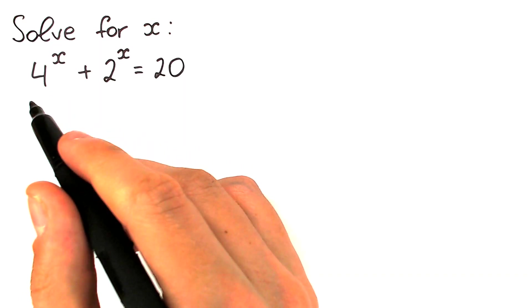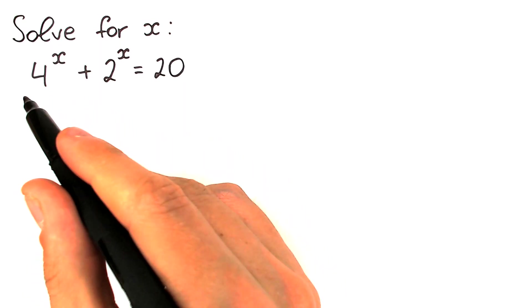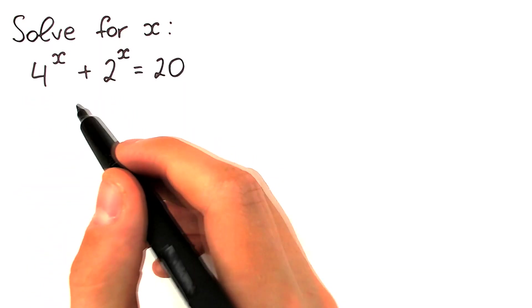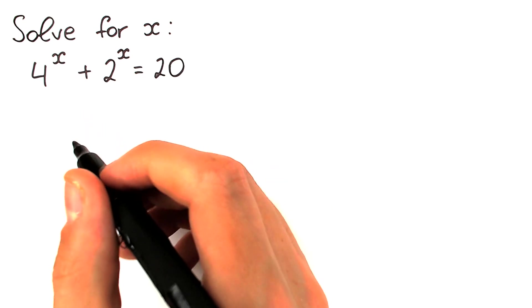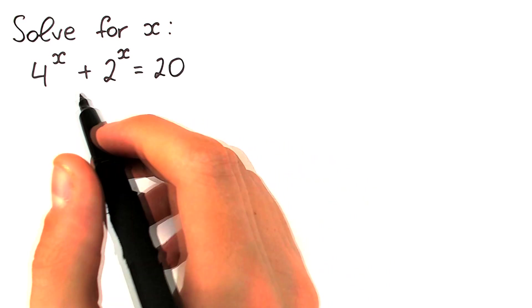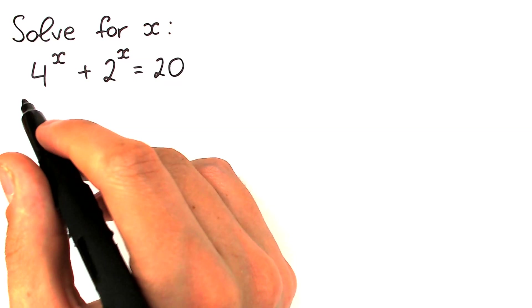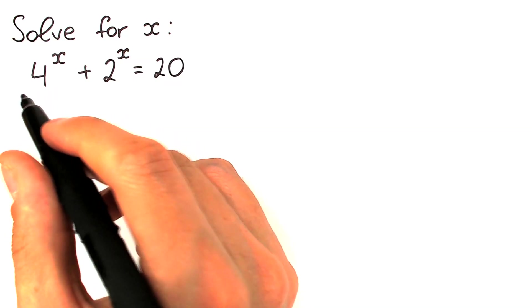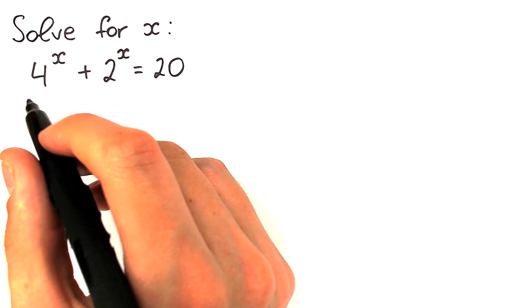First of all, we have an exponential equation with different bases — we have 4 and we have 2. It's really hard to work with different bases, so it is great to create the same base. Since 4 and 2 are related, we can easily write 4 as 2 squared.